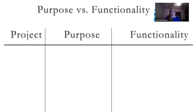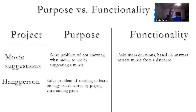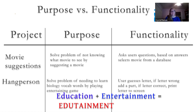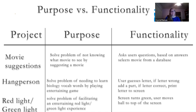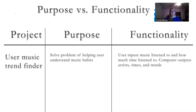The next example was a movie suggestion program: it solves the problem of not knowing which movies to see, and the functionality is it asks questions and prints out answers based on what you said. The next was something like a hang-person game: the problem it's solving is the problem of needing to learn biology vocab words by playing an entertaining game. This is an example of turning entertainment into edutainment, which seems to be more favorably looked upon by the AP board. The next was a red light/green light game — the purpose is entertainment, so avoid this if you can. Then a user music trend finder: the purpose is to help users understand their music habits, and the functionality involves inputting music and getting listening time back.